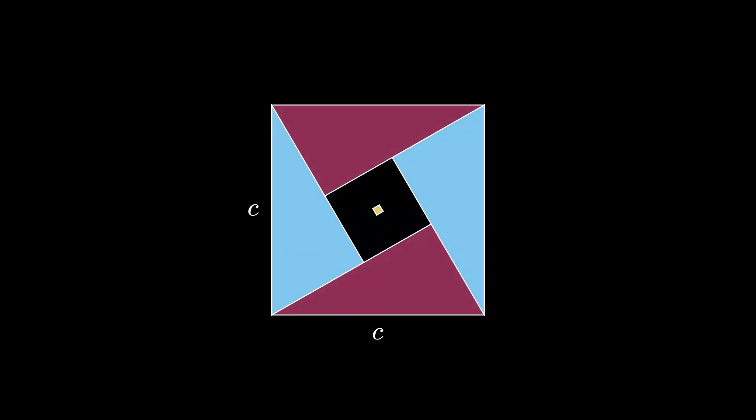The square shape has a side of length C, and there is a missing inner square. The inner square has a side length given by the difference of the leg lengths of the triangle, so we see that the side length of the inner square is A minus B.